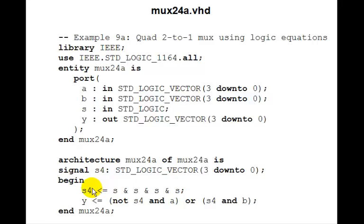And then we'll concatenate four s's together. This ampersand symbol means concatenation. So s4 is just s3, s2, s1, s0. And each of those bits is just whatever s is, this input s, 0, 1. So we got s, s, s, s. So this is a 3 down to 0. And now we use the s4 in here.